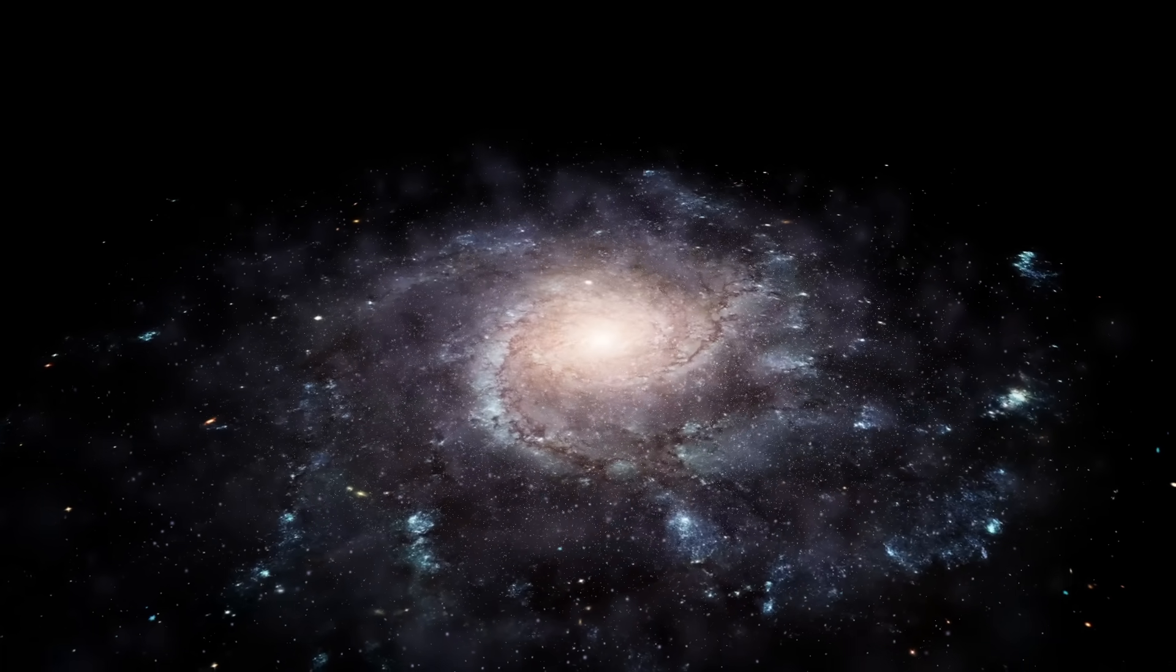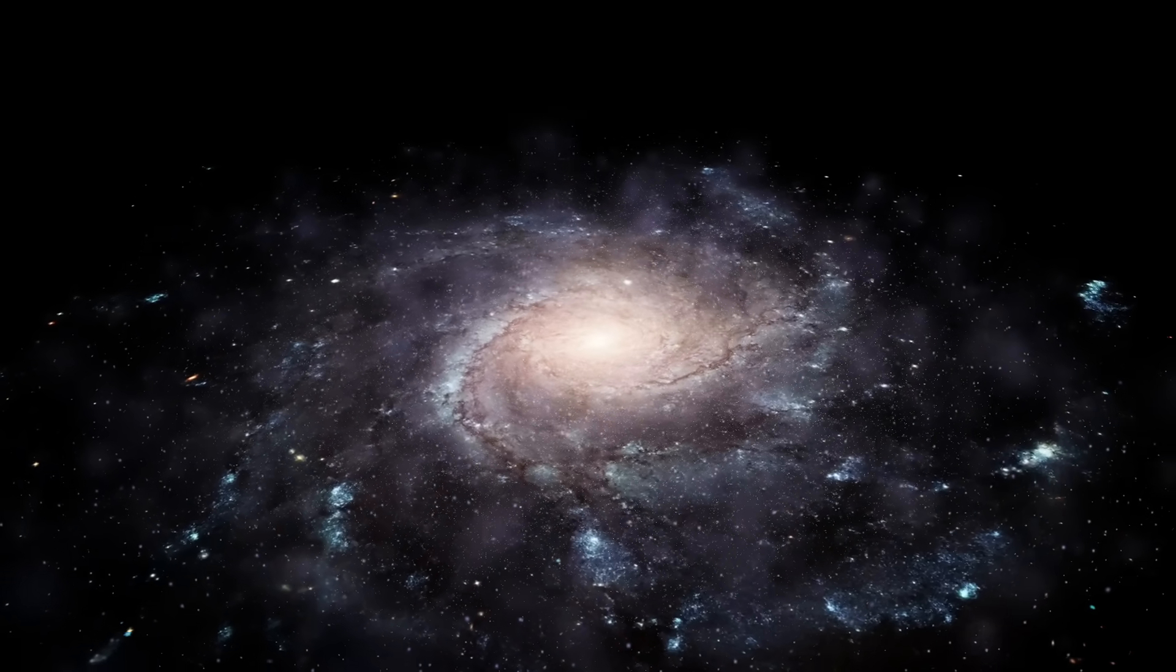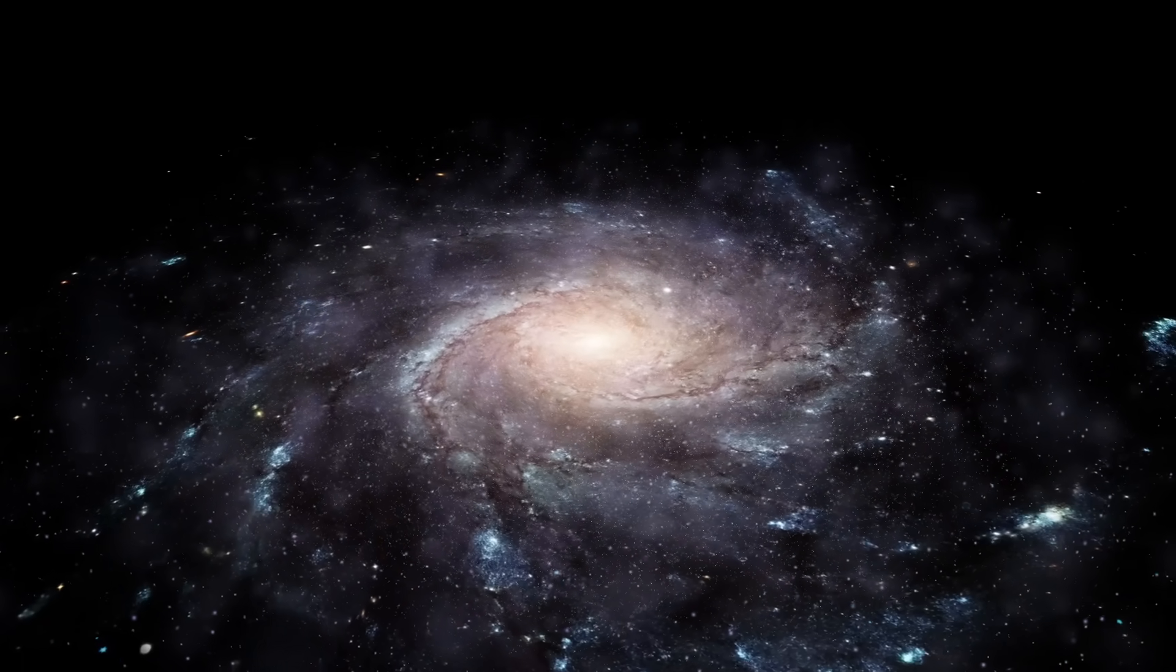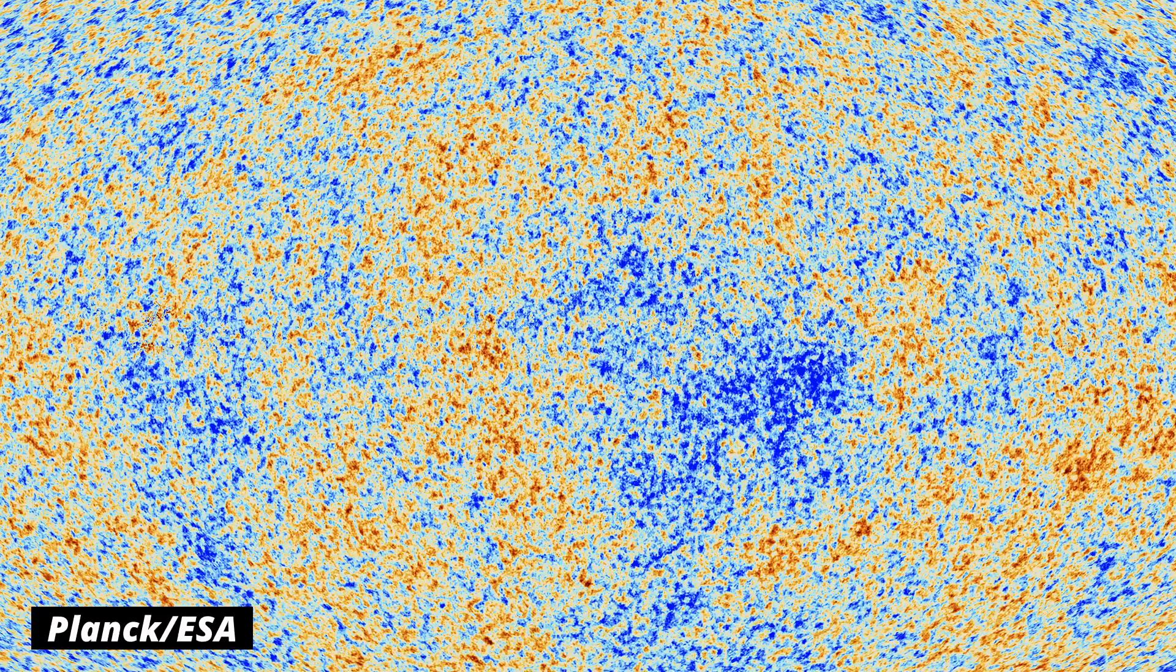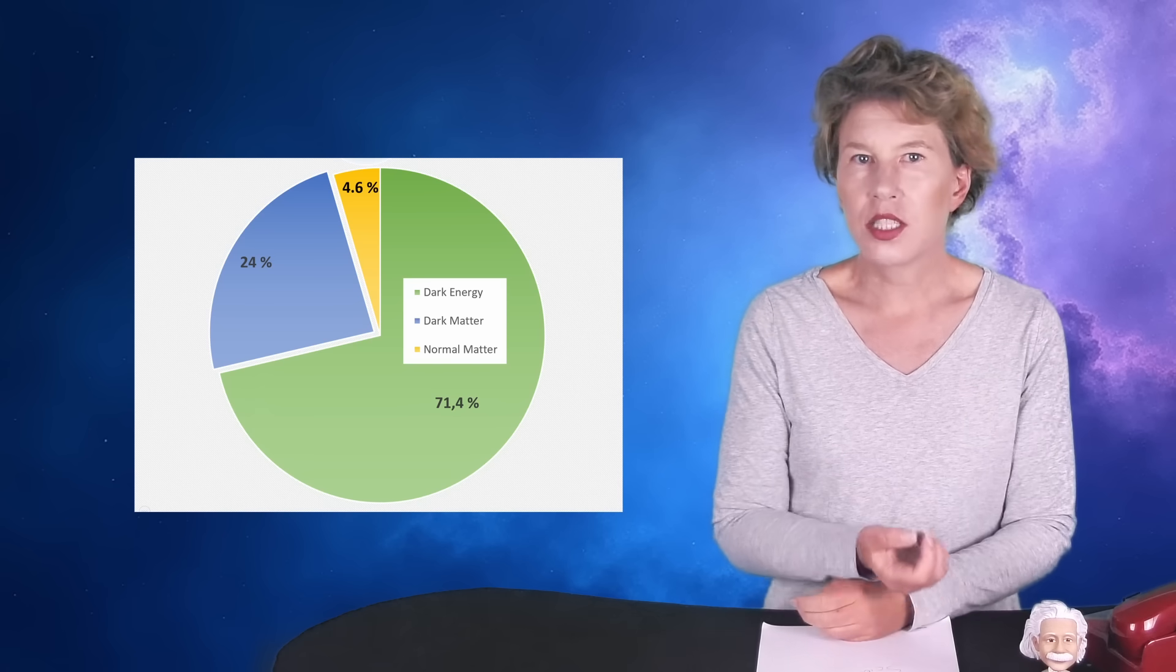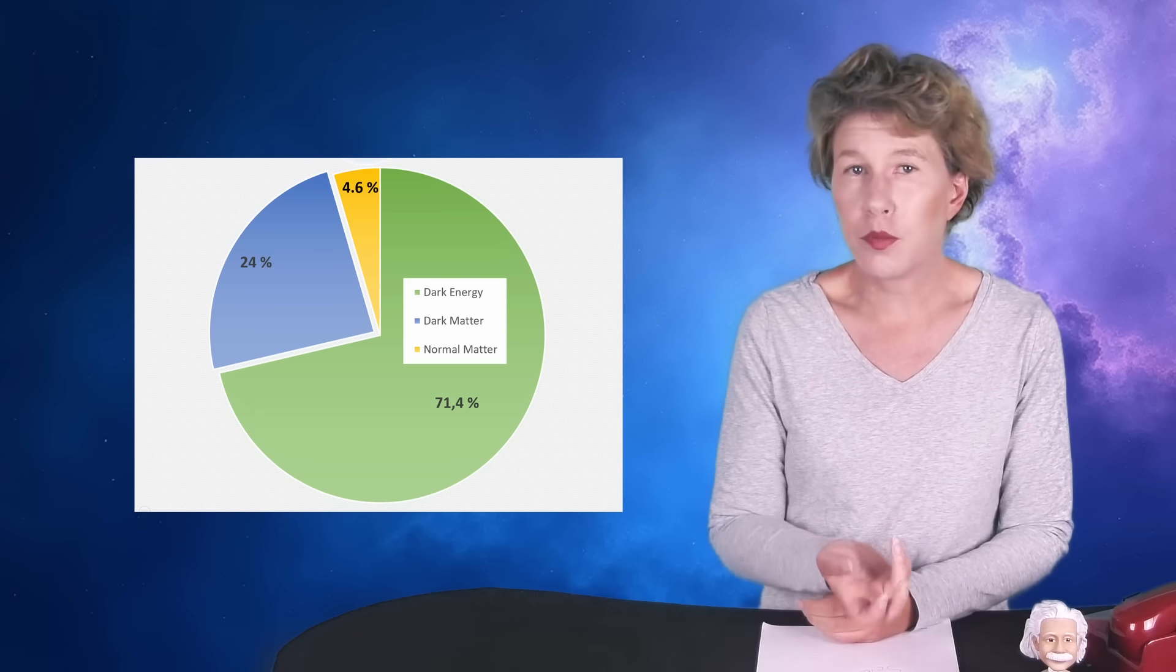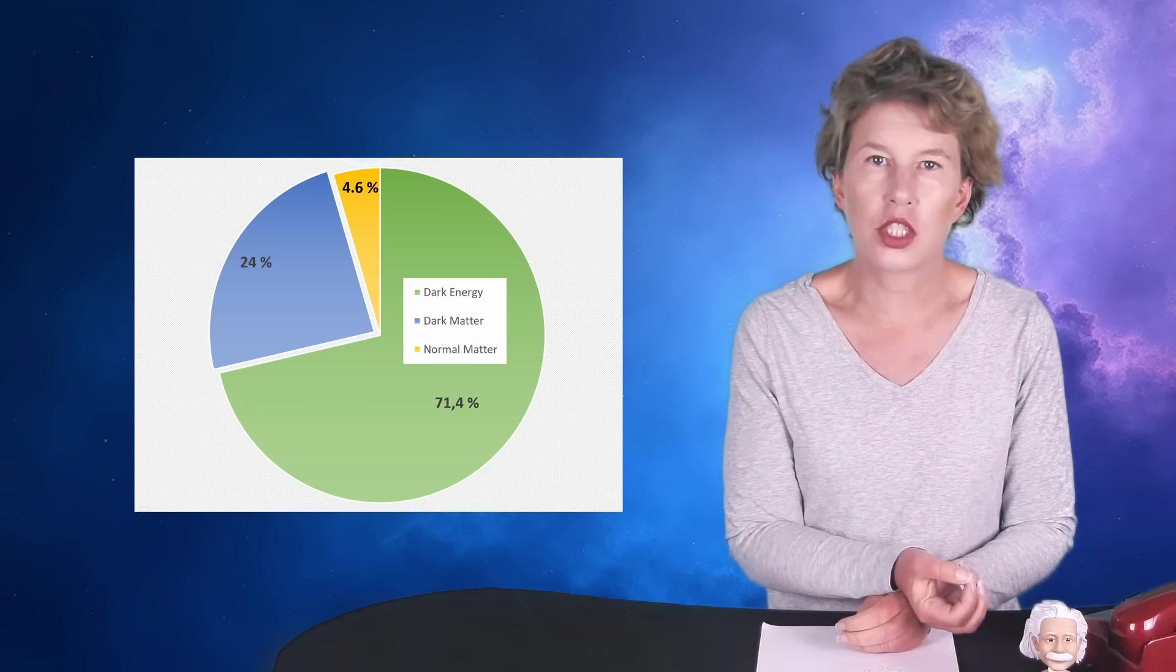We have gravitational lenses that are stronger than they ought to be, galaxies that rotate too fast or that move too fast. The structures in the universe form faster than they should. The cosmic microwave background has patterns that we can't explain and so on. So we have solid evidence. But evidence of what? One way to explain these observations is by postulating a new type of matter, the dark matter, that we can measure only through its gravitational pull.